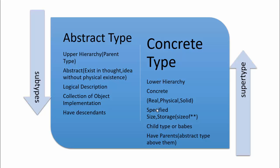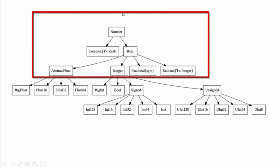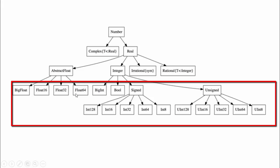Let me show you an example — this is the hierarchy structure for numbers in Julia. At the top is Any, which is an abstract type and the highest of them all. Then we have Number, Complex, Real — all of these are abstract types. They have children which include concrete types like BigFloat, Float16, and so on. Those concrete types are at the bottom, and below all of them is the Union type, which is the list of all of them.